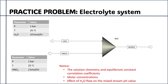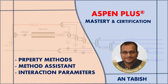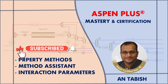For further practice, you are given the following problem: two streams labeled H2O and HNO3 are mixed together. The H2O stream enters at 1 bar and 25°C with a flow rate of 10 kmol/hr. The HNO3 stream also enters at 1 bar and 25°C but with a nitric acid flow rate of 2 kmol/hr. You are asked to notice the solution chemistry and equilibrium constant correlation coefficients, molar concentrations of apparent and true components in the mixed stream, and the effect of H2O flow rate on the mixed stream pH value. In the next video we will explore thermodynamic property methods, the wizard for defining thermophysical property methods, and discuss the importance of binary interaction parameters in thermophysical properties and process simulation.